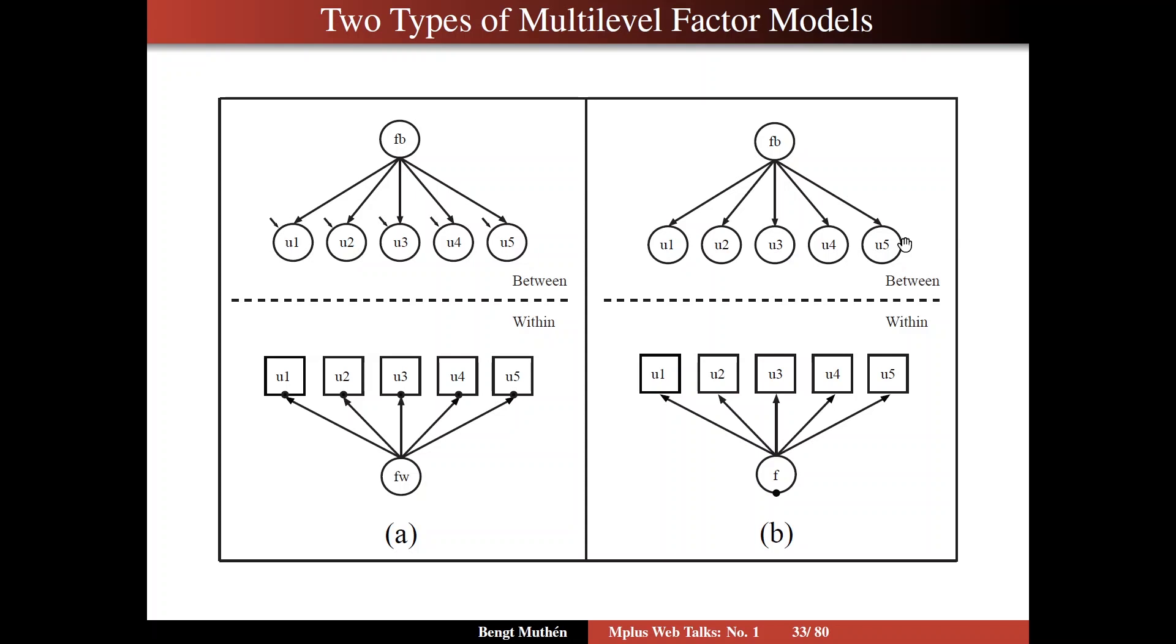So this is a different formulation, where F is no longer pure within variation, but it consists of both within and between. As a matter of fact, you may prefer to write this model in a different way, by having an FB factor sitting down here, and influencing the FW, and thereby influencing the items indirectly, because the IRT model imposes equality of the loadings on between and on within. So that would be perfectly okay to let the between factor influence the within factor, because then it would influence the items with the same loading as the within part.